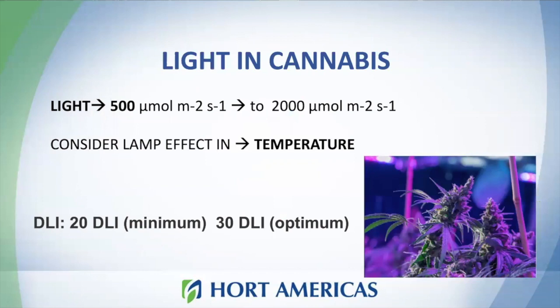When selecting a lamp for cannabis we always need to think about the amount of light provided by the lamp. In comparison to other crops grown indoors, cannabis requires more light. Usually we look for a lamp providing more than 400 micromoles per square meter per second. Most commercial operations will look for lamps reaching levels around 1000 micromoles. As you can notice, this plant can take a lot of light. Recommended DLI levels go from 20 to 30 moles per square meter per day.